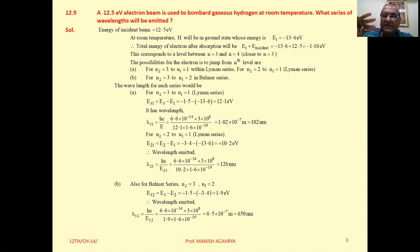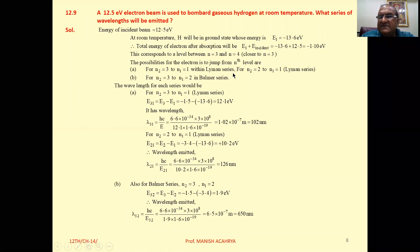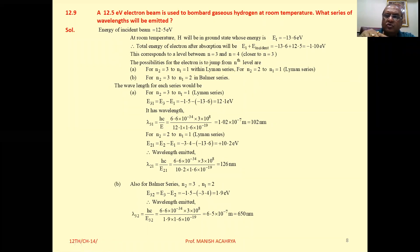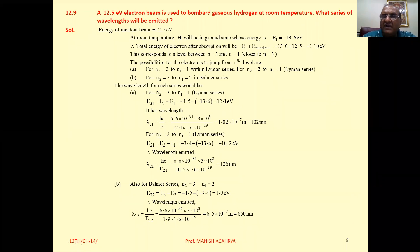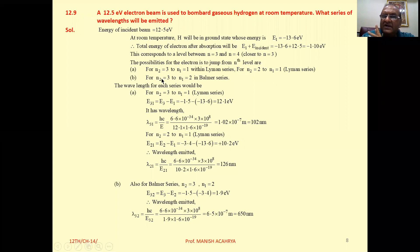In this way we will get 3 spectral lines. For 3 to 1 you will get Lyman series, and when it jumps from 3 to 2 you will get Balmer series, and when it jumps from 2 to 1 you will again get Lyman series. So for transitions 3 to 1 and 2 to 1 you get Lyman series, and for transition 3 to 2 you get Balmer series.